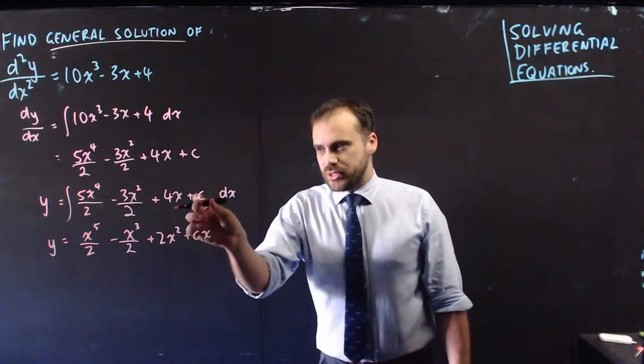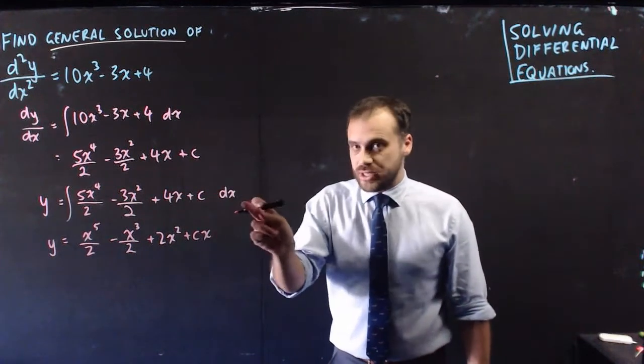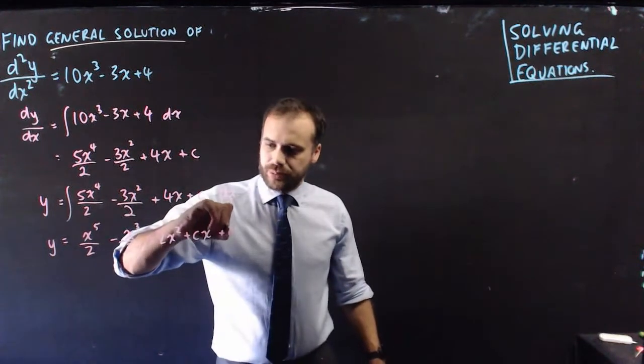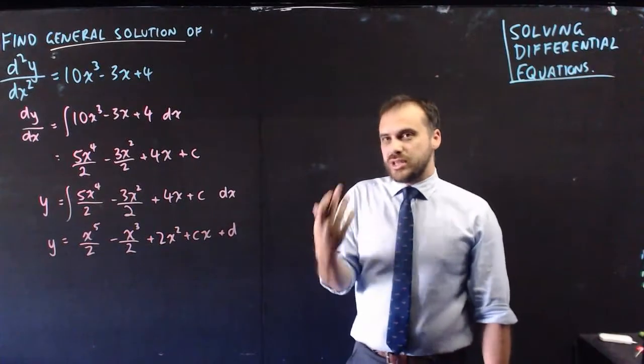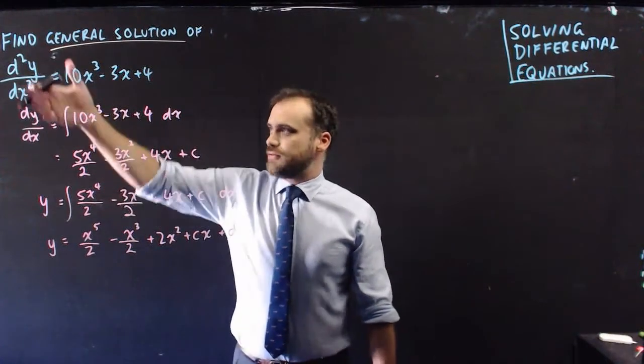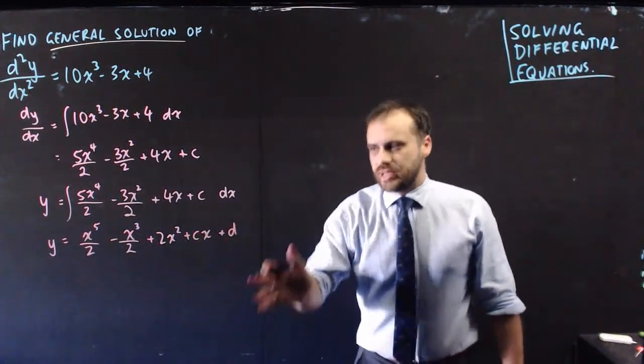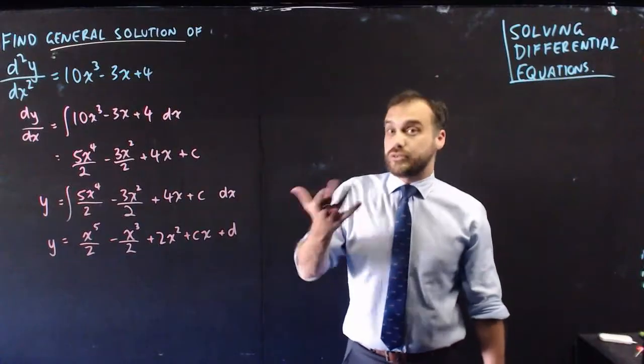Now that was a constant number, but we also then have another constant on the end here, our plus d. So you need to be careful when you're finding the general solution of a derivative that is a second derivative, because you're going to have this c and this d that you're going to have to follow through.